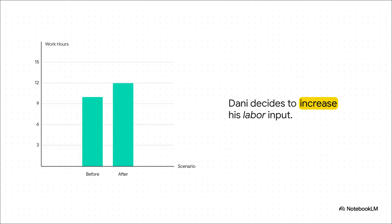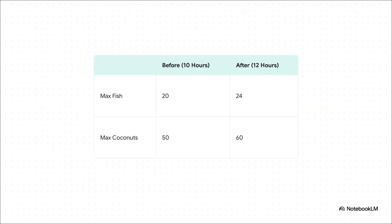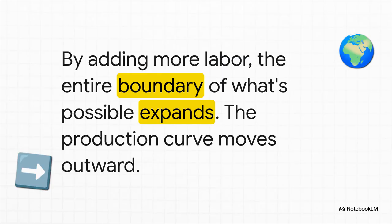Let's head back to Danny's island and see how this works with labor. Danny decides he wants to increase one of his inputs — his own labor. He decides he's going to start working 12 hours a day instead of 10. He's literally putting more of a factor of production into his own personal economy. With just those two extra hours of work, his entire world of possibilities expands. He can now get a maximum of 24 fish instead of 20, or a maximum of 60 coconuts instead of 50. His whole economic boundary — that line we drew — has literally shifted outward. By increasing the quantity of just one input, his labor, Danny achieved real, measurable economic growth. The same thing would have happened if he built a second fishing net — that's just more capital.